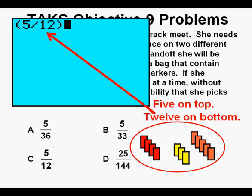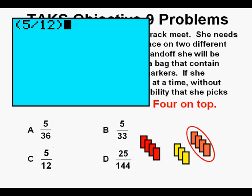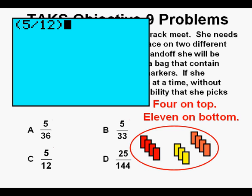We might be tempted to choose answer C since it's 5 over 12. But without replacement, Mallory has taken one orange marker out of the bag, so there are four orange markers left, which go in the numerator, out of 11 remaining total. We multiply 5 twelfths by 4 elevenths.